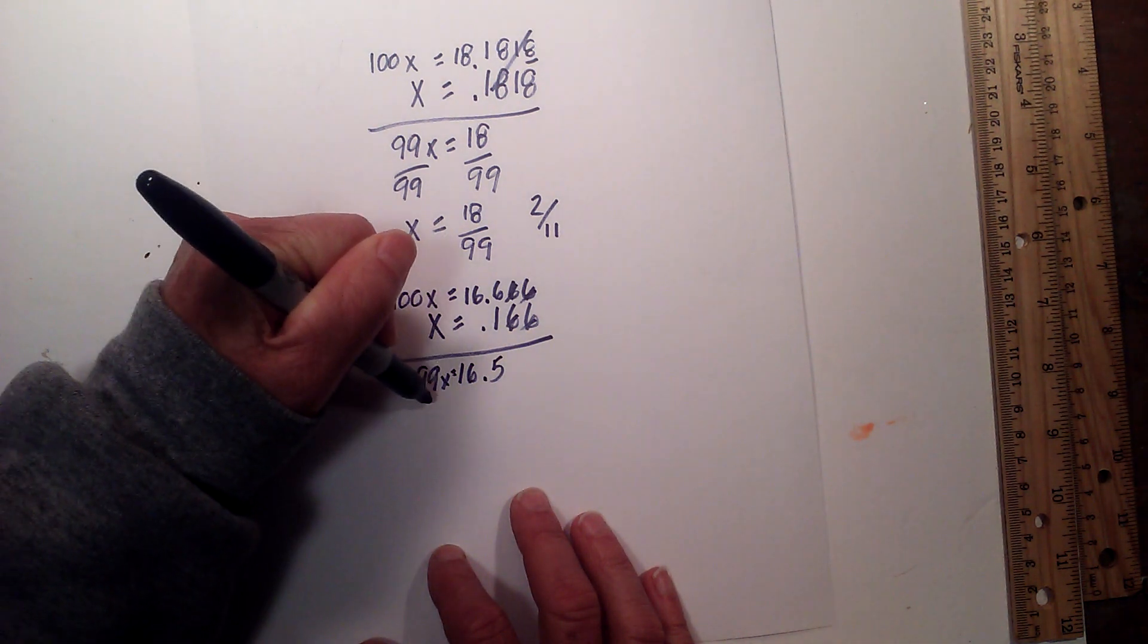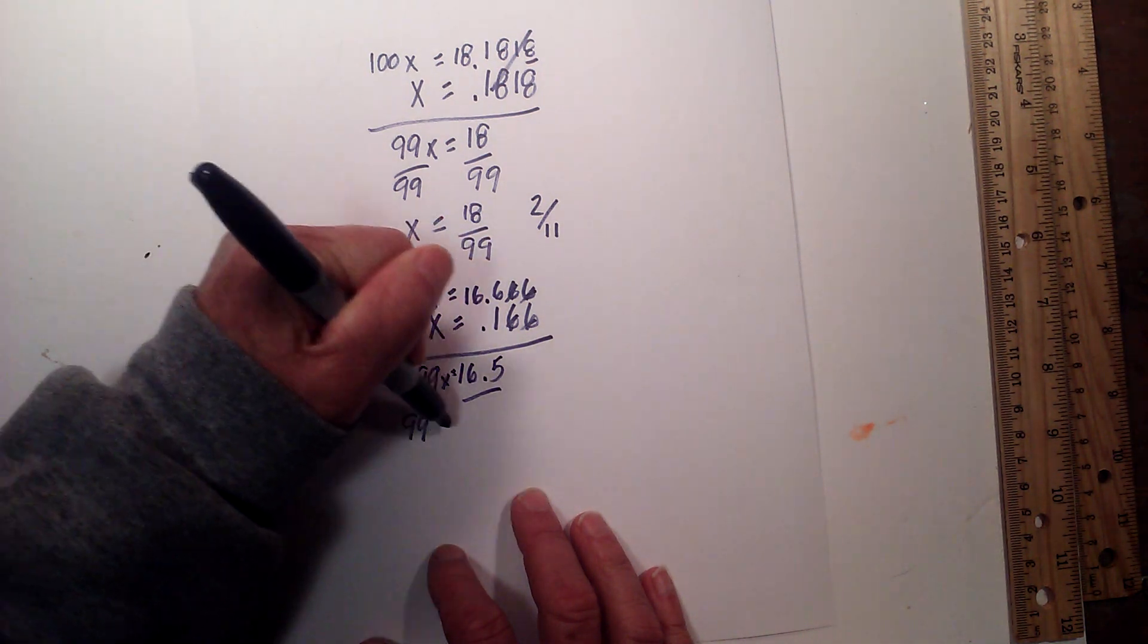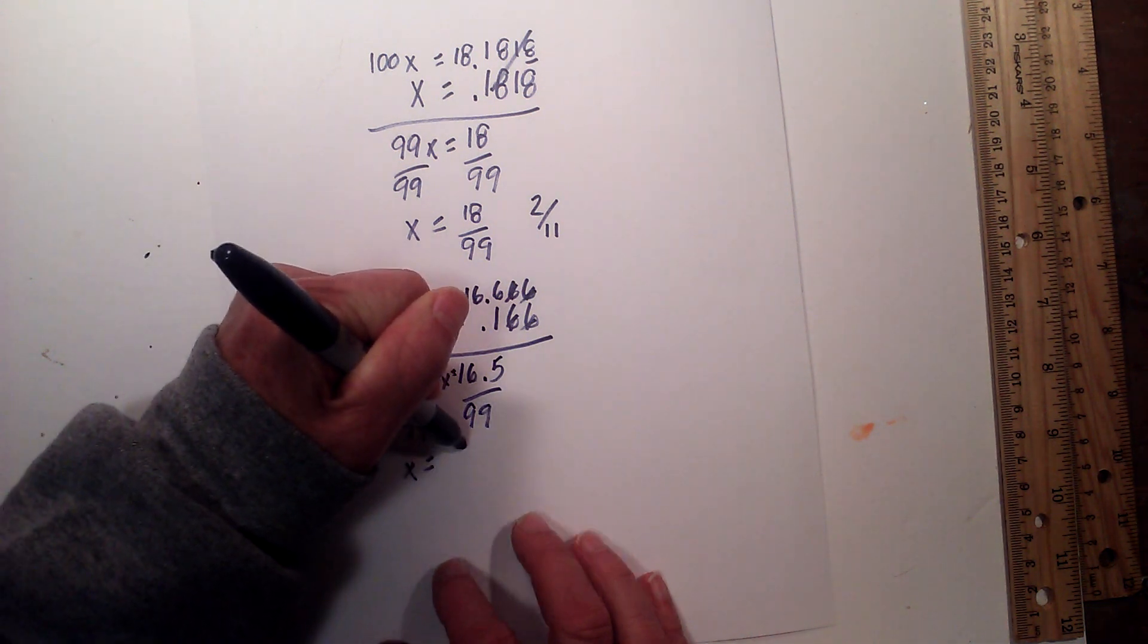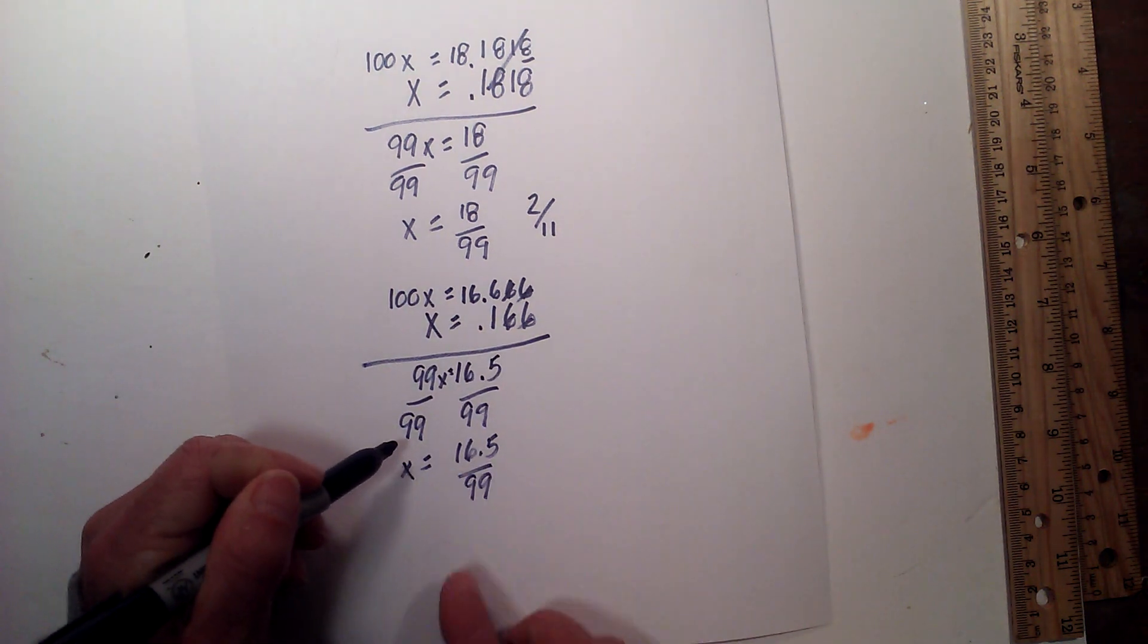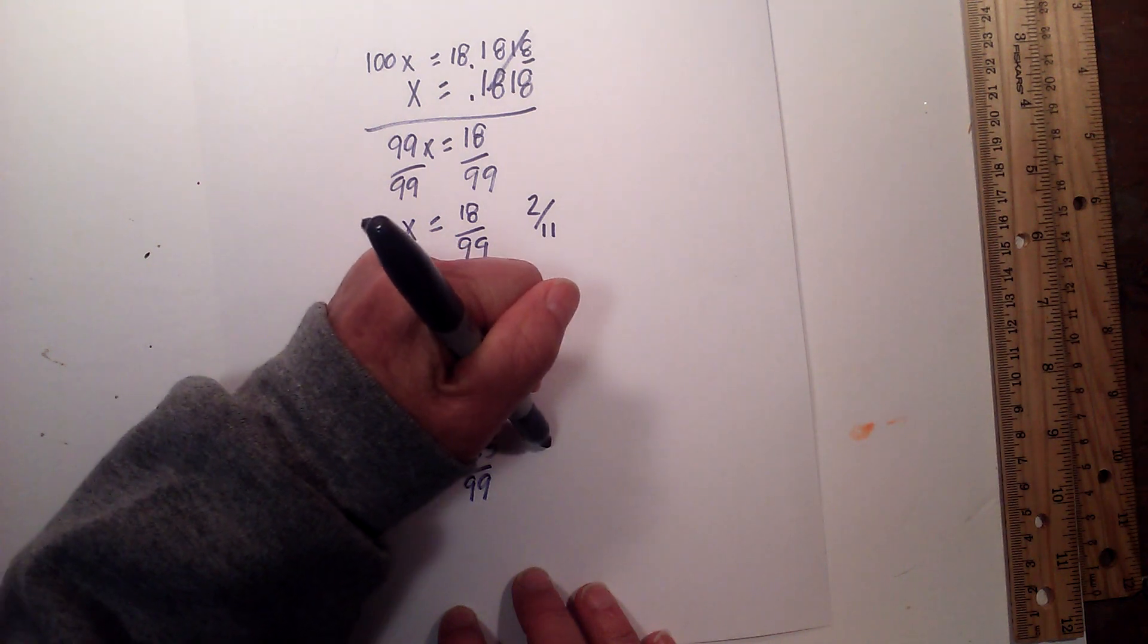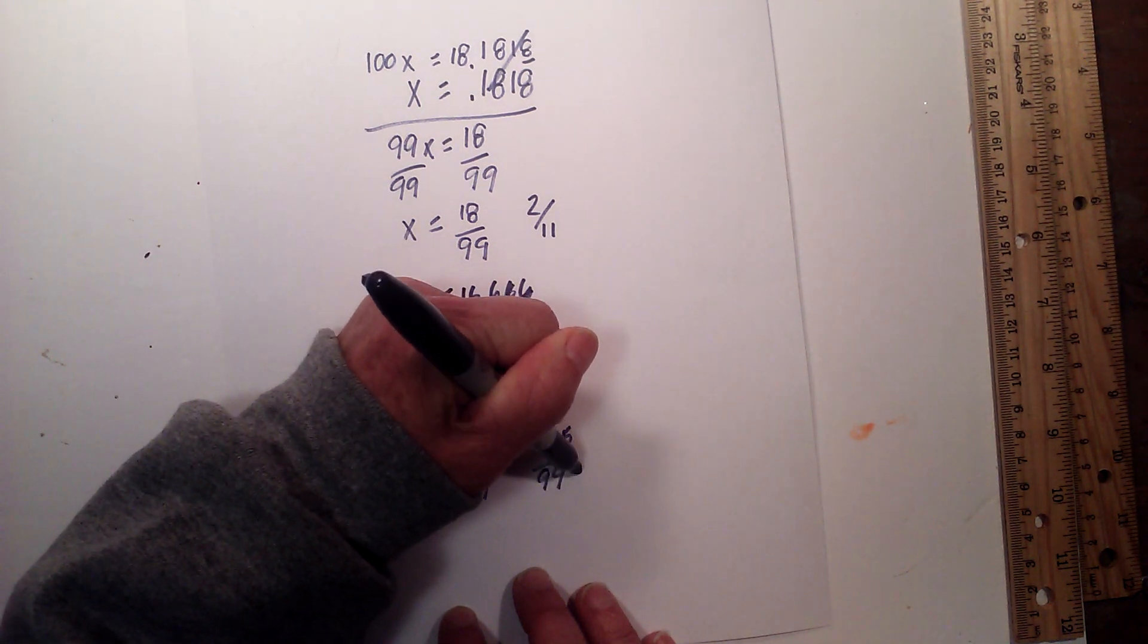So let's divide both sides by 99. x equals 16.5 over 99. Now to get rid of the decimal, just multiply it by 10. So this becomes 165 over 990.